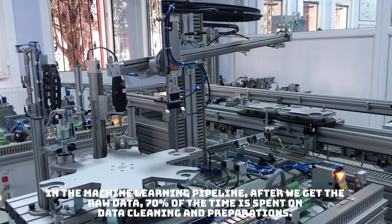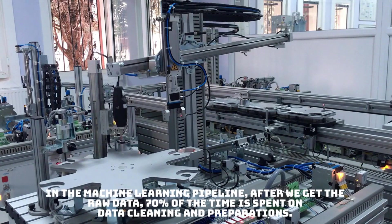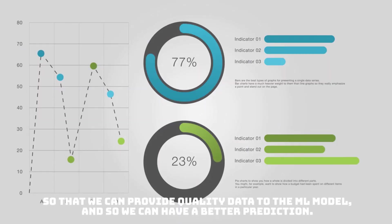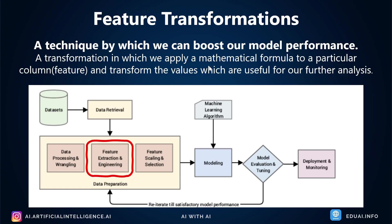In the machine learning pipeline, after we get the raw data, 70% of the time is spent on data cleaning and preparation. We do this so that we can provide quality data to the machine learning model and hence get better predictions. Quality of the data is directly proportional to the accuracy of the model. Feature transformation is a technique by which we can boost our model's performance. Formally, it is a transformation where we apply a mathematical formula to a particular column — a feature — and transform those values, which are useful for further analysis, and in turn we get better model performance.